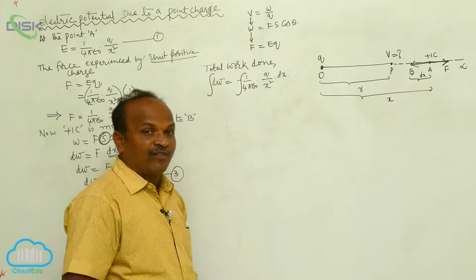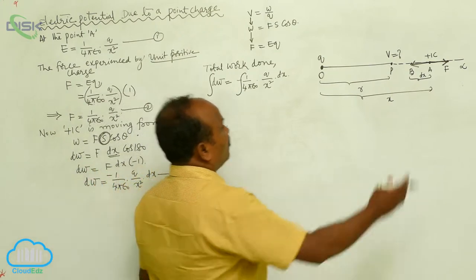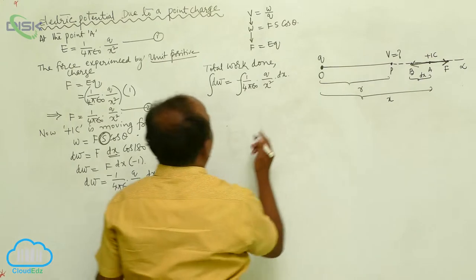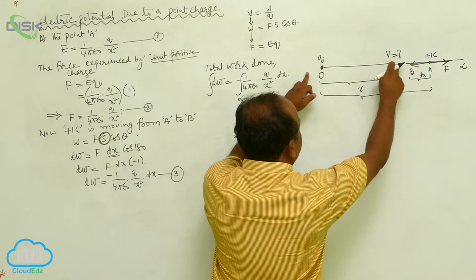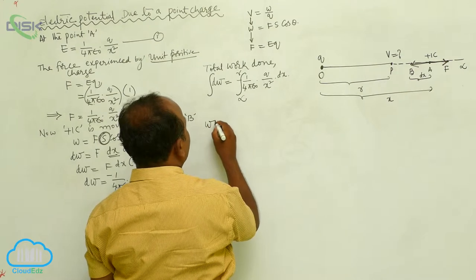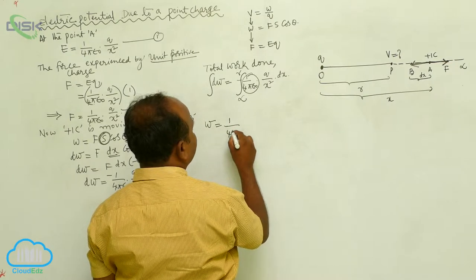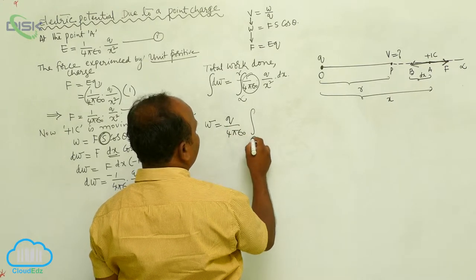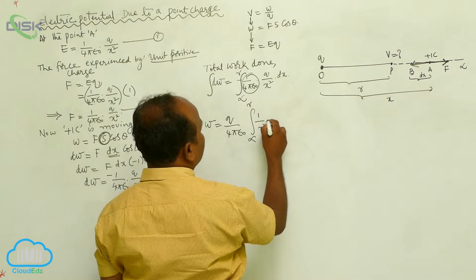While integrating, from which point to which point do you want to integrate? According to the definition, you want to move that unit positive charge from infinity to this point. This point is at a distance of r. Therefore, the integration of dW equals W. The constant 1 divided by 4πε₀ and q are both constants, so the integration runs from infinity to r of 1 divided by x² times dx.